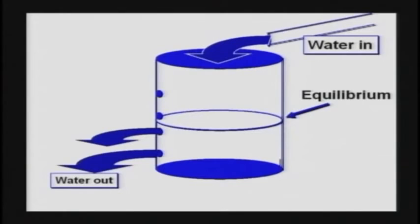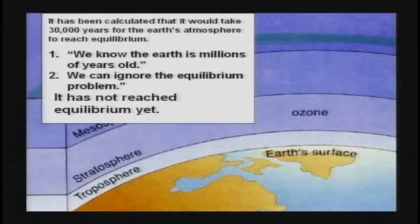With the atmosphere, they asked: when would it reach equilibrium? The guys who invented carbon dating in the late 1940s did a bunch of studies and said, if we took a brand new planet Earth, how long would it take to reach the point where the production rate and the destruction rate are the same? They determined it would take about 30,000 years to reach equilibrium. Then they made two mistakes. Number one: we know the Earth is millions of years old. Number two: they said we can ignore the equilibrium problem because we would have passed that point 30,000 years ago.